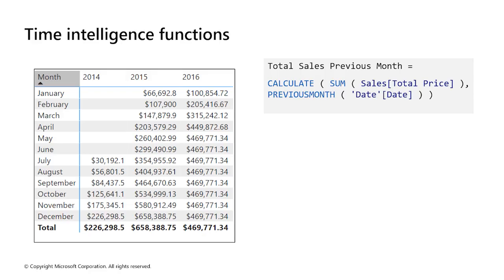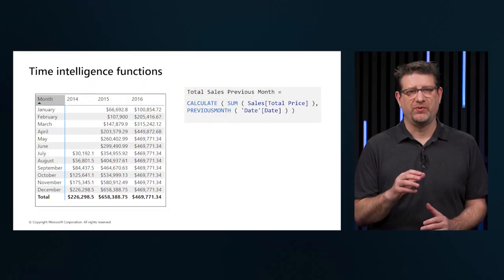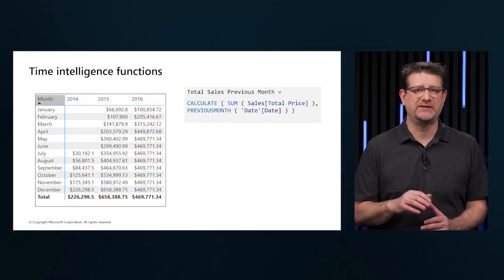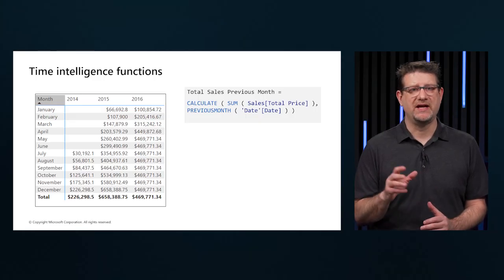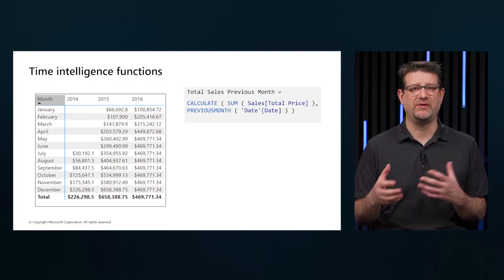DAX simplifies comparing current sales with previous periods — for example, to view the sales of this month next to last month's sales. This measure uses the CALCULATE function, indicating that we are overriding the context. We are summing total price and for the second argument using PREVIOUSMONTH for the override, which tells Power BI that no matter what month is the default, the system override is the previous month. In the new visual, we can see total sales for July compared to June, and the difference between current and previous month is now available.